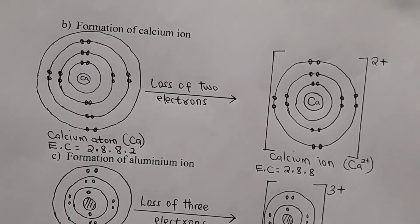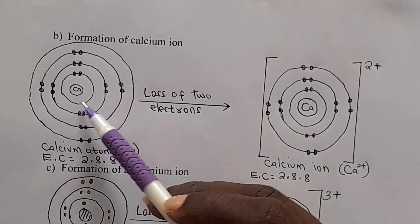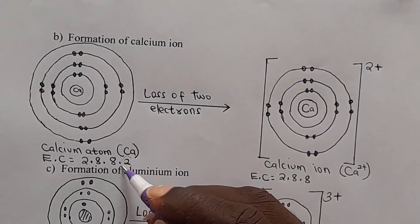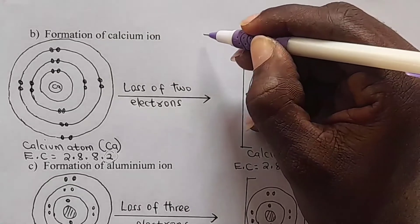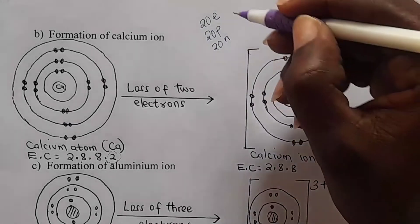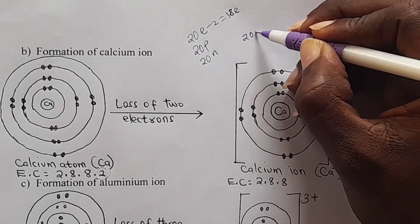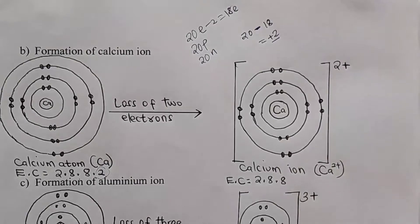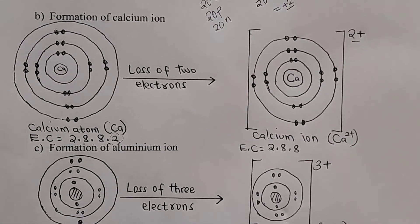Next, we have the formation of the calcium ion. Calcium is number 20, so it has an electron configuration of 2,8,8,2. For it to become stable, it has to lose two electrons. After losing two electrons, it remains with 18 electrons. So we have 20 protons minus 18 electrons, which gives positive two. The electron configuration of the calcium ion is 2,8,8, and its charge is 2+.